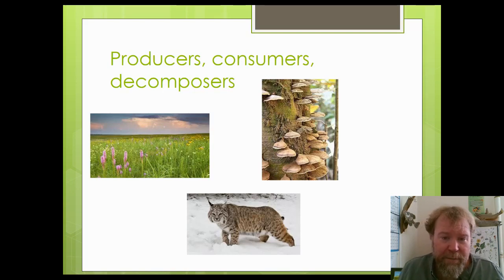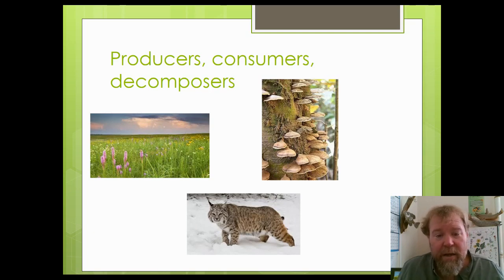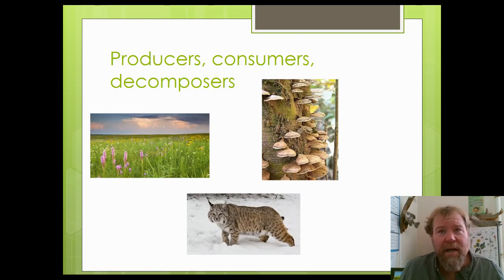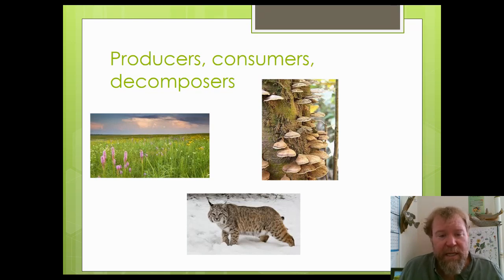Consumers, like the bobcat pictured, are key to ecosystems because they prey on other consumers and they also eat producers. A decomposer, like the fungus on the tree pictured on the right, is very crucial to ecosystems because they're usually bacteria, fungus, or invertebrates that break down dead animal matter, dead plants, and animal waste. Within an ecosystem, you've got producers, consumers, and decomposers all working together to help the ecosystem thrive and be healthy.